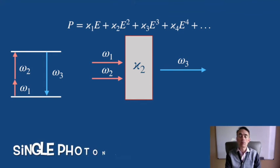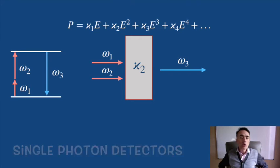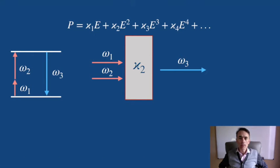This can be used for single photon detectors. We have good single photon detectors in the visible range, but we do not in the infrared. If we can change the frequency from the infrared to the visible, this would allow us to detect single photons in the infrared.